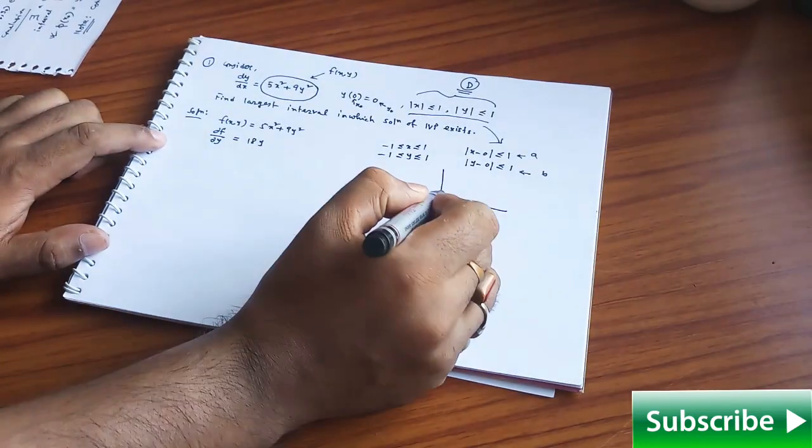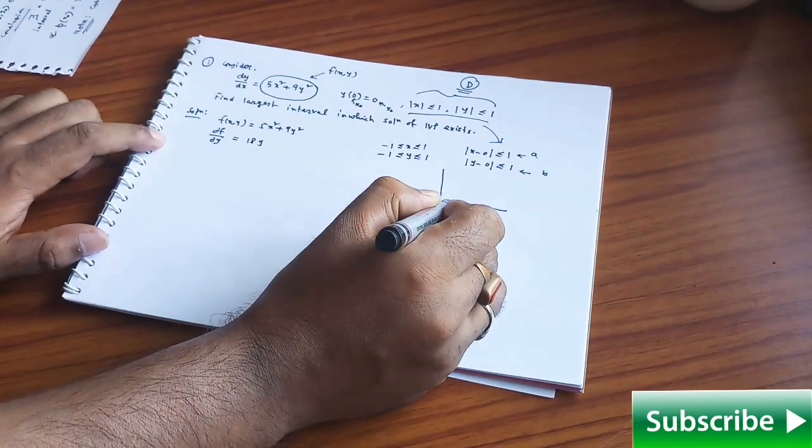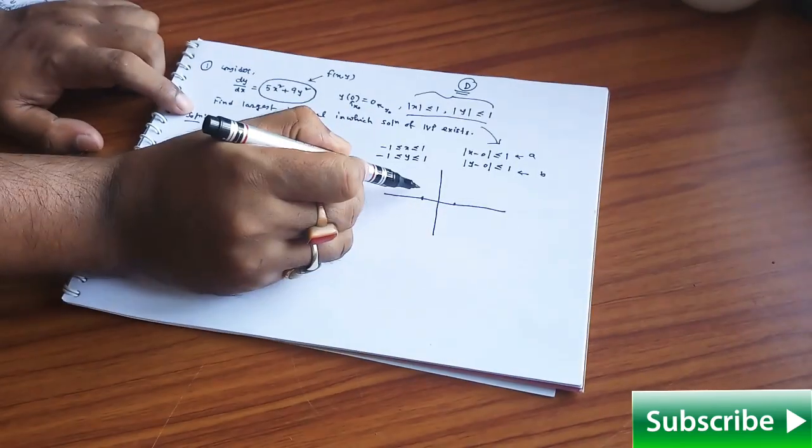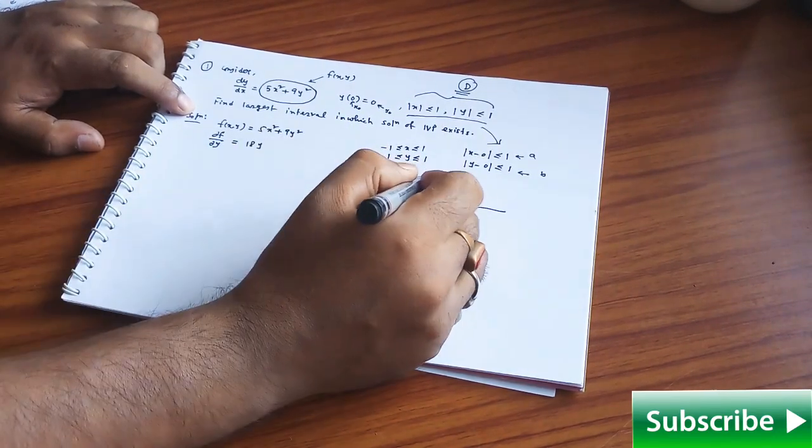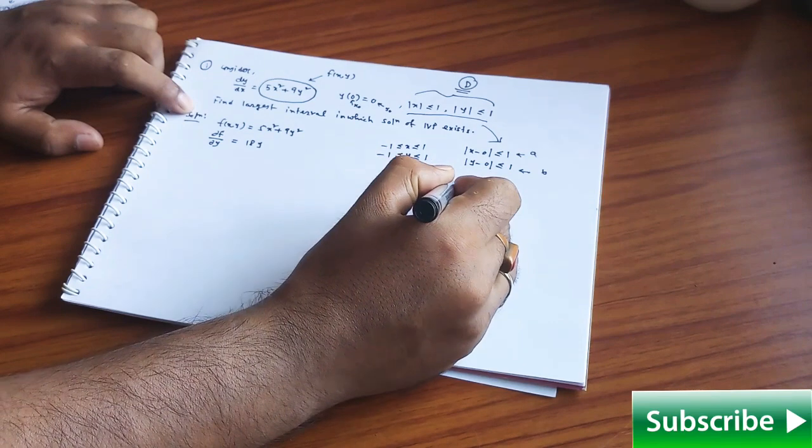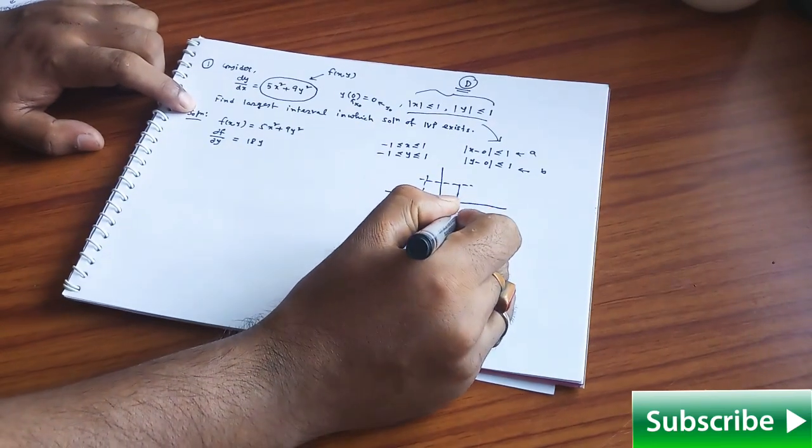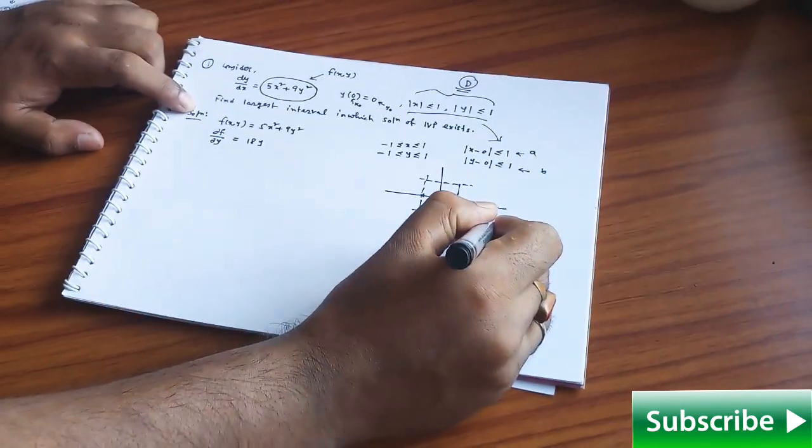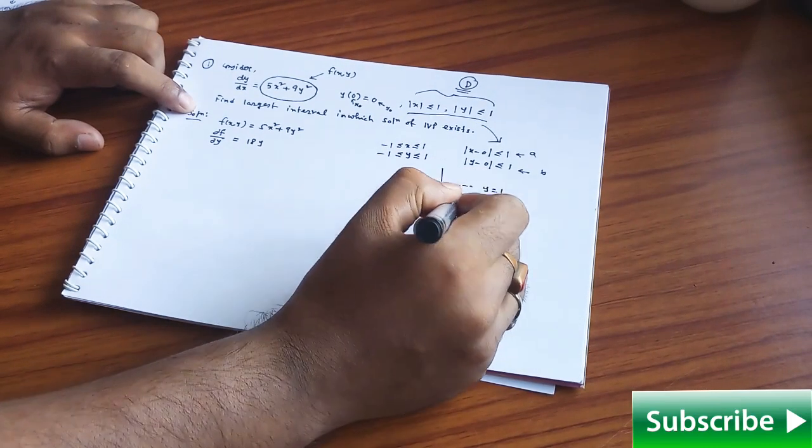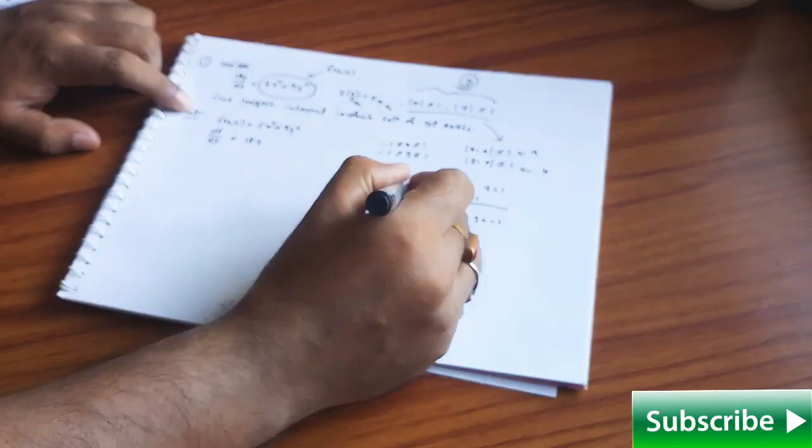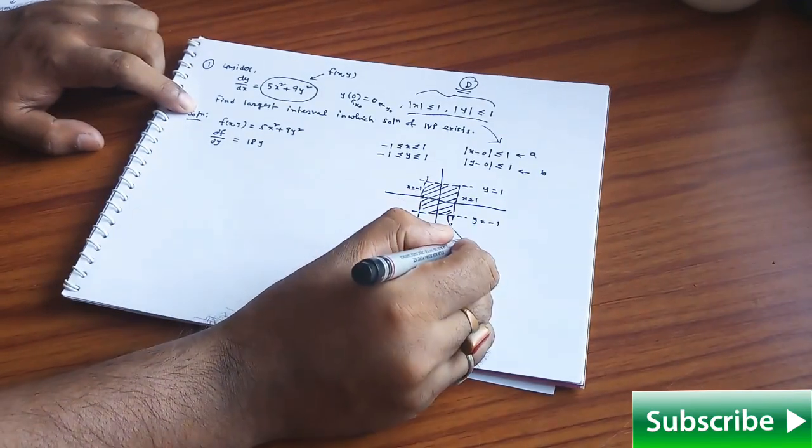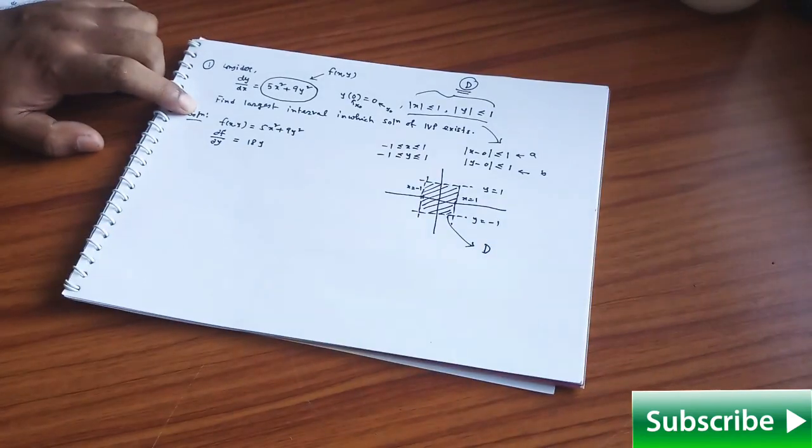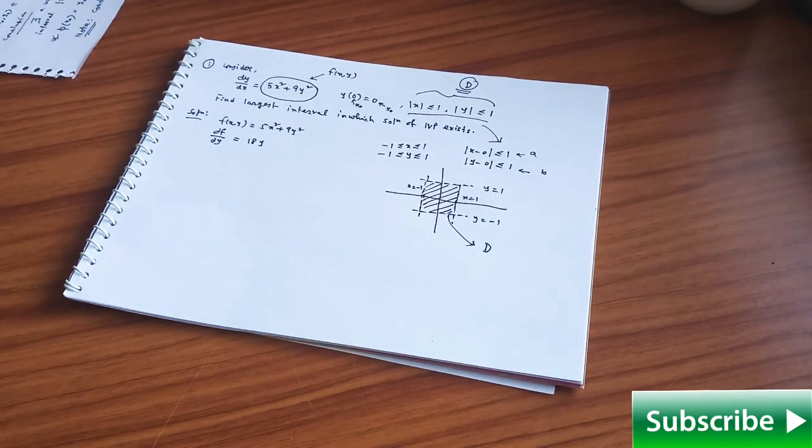You have the domain like this, this is y = -1, y = 1 and this is x = 1, this is x = -1. This is your domain or the d we are considering fine.